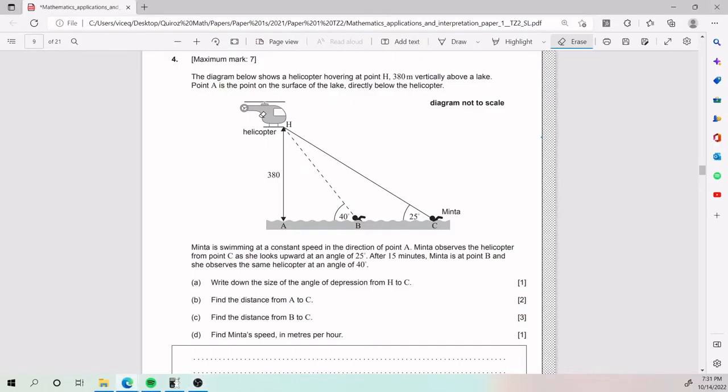Alright, so for number four, we have the diagram below shows a helicopter hovering at point H, 380 meters vertically above the lake. Point A is the point on the surface of the lake, directly below the helicopter, so this is a perfectly vertical line.